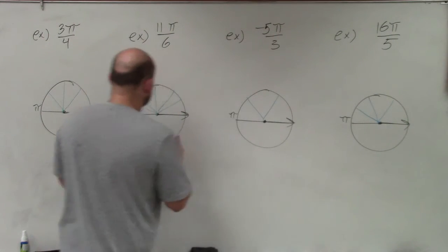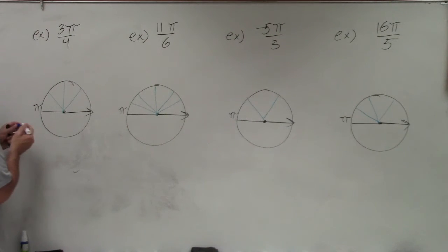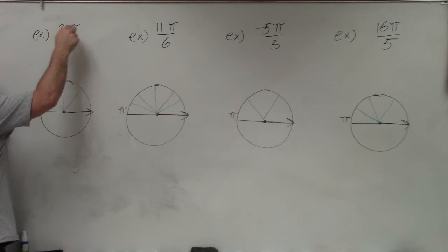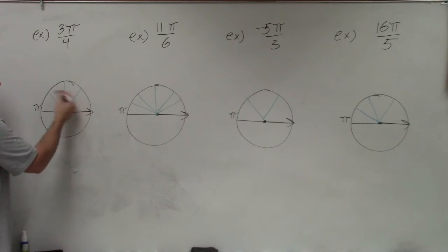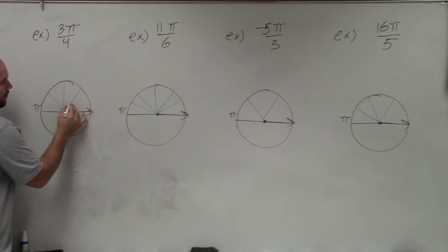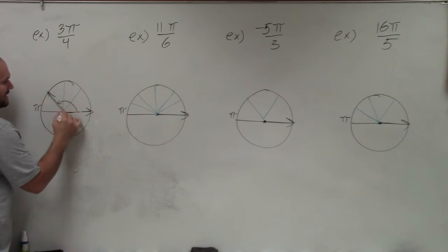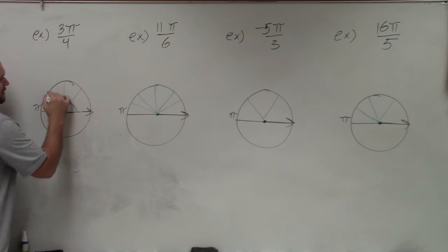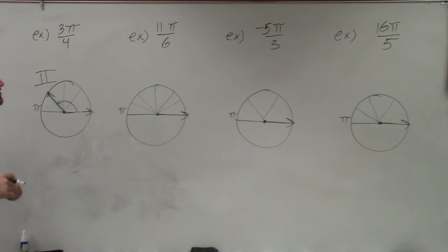For this one, I have 3π/4, so I don't need to reflect. I start at the initial side and travel three sections: 1 pi over 4, 2 pi over 4, 3 pi over 4. You can see that my terminal side lies in the second quadrant.